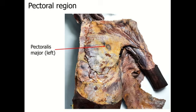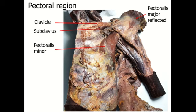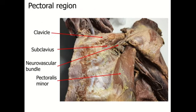This image shows the left pectoral region. When the pectoralis major muscle is reflected, you can clearly see the pectoralis minor muscle underneath. Pectoralis minor takes origin from the third, fourth, and fifth ribs and is inserted into the coracoid process of the scapula. In this image, you can identify the clavicle and the subclavius muscle. In the enlarged view, identify the neurovascular bundle emerging from the clavipectoral fascia between the subclavius muscle and the pectoralis minor muscle, which has been removed in this specimen.